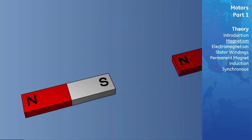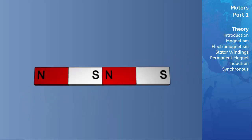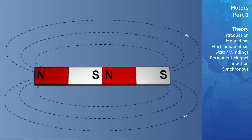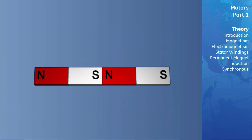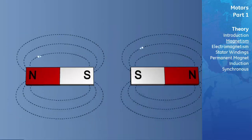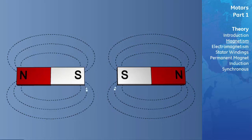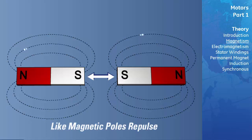When the unlike poles of two magnets are brought together, their lines of flux combine and tend to pull or attract the two magnets together. We can conclude that unlike magnetic poles attract one another. Conversely, when the poles of the same polarity are brought together, the lines of flux produce a force that tends to repel the magnets apart — like magnetic poles repulse one another. This attraction and repulsion plays an important role in the operation of an electric motor.